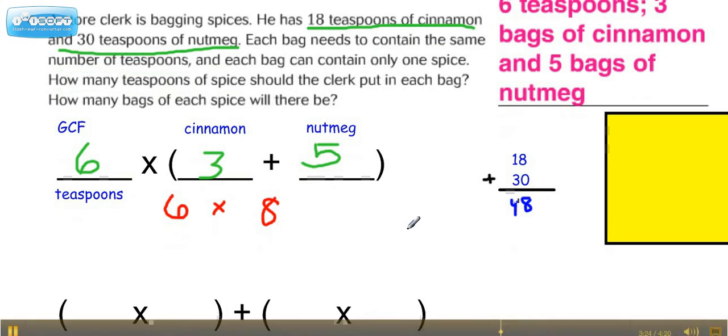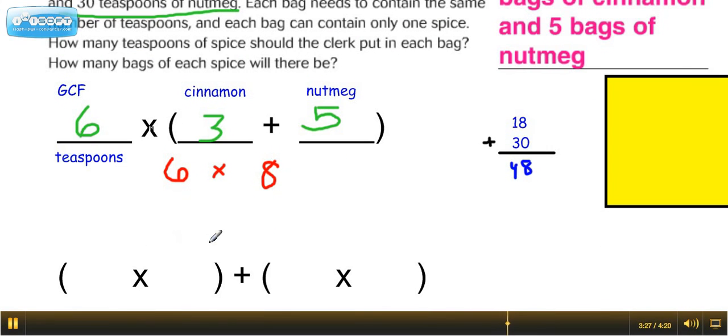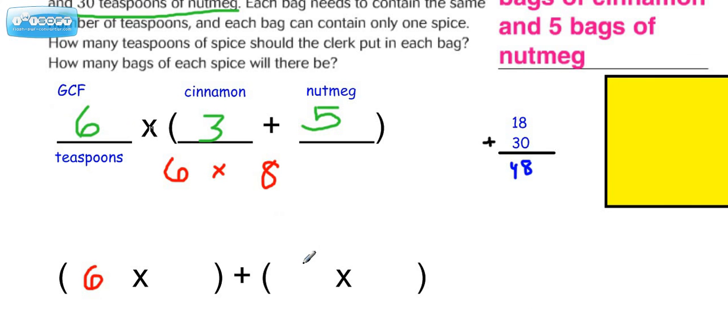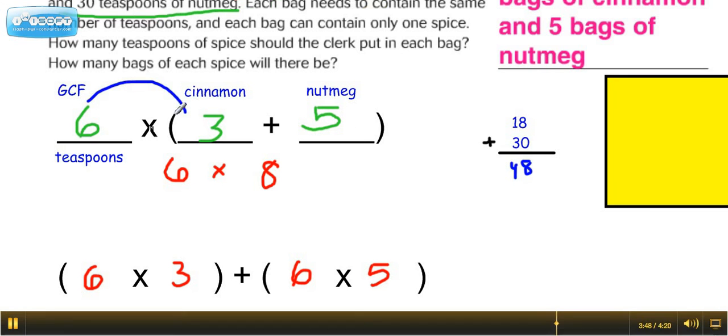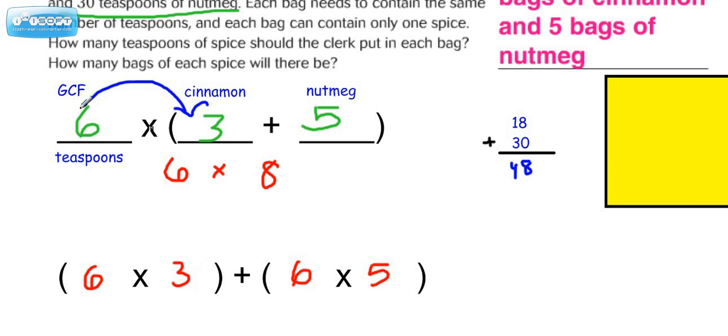Now there's another way that you may see distributive property organized, and I want to show you this just in case it comes up on a quiz or a test. You know how 6 was the GCF? You might see that put in both sets of parentheses. And then we can take these two numbers. We'll put the 3 here, and we'll put the 5 here. And I want to show you why this and this are really the same thing. Now this means 6 times 3, which we have represented here. And this, 6 times 5, was represented here. And of course we're adding the two things together.